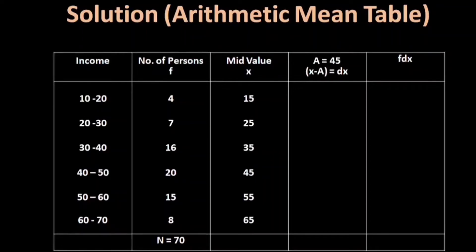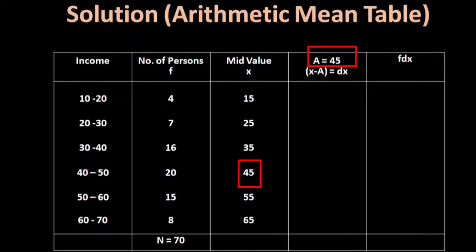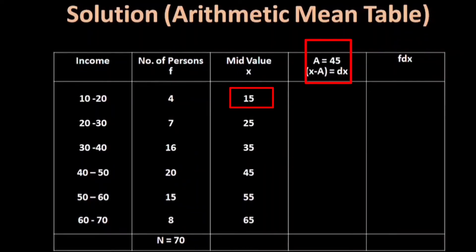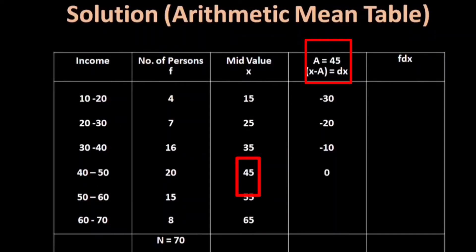X minus A equals DX, with A equal to 45. Computing: 15 minus 45 equals minus 30, 25 minus 45 equals minus 20, 35 minus 45 equals minus 10, 45 minus 45 equals 0, 55 minus 45 equals plus 10, 65 minus 45 equals plus 20.